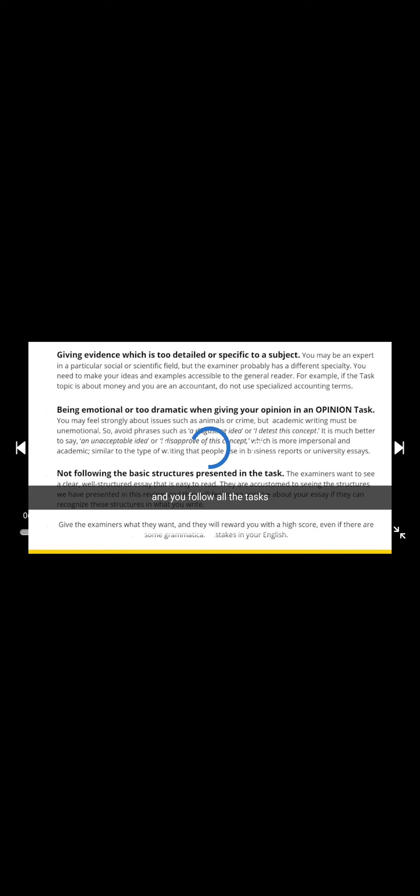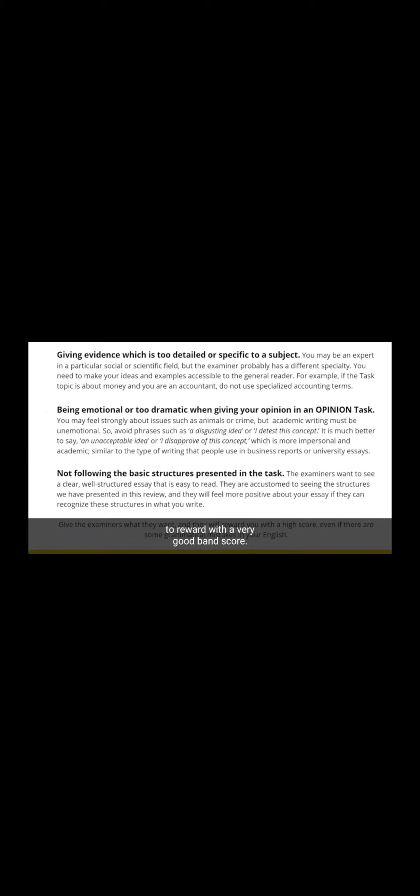If you do all these points and follow all the task requirements, I'm sure the examiner will be happy to reward you with a very good band score. Now we are going to discuss sentence types. You need to use four types of sentences to reach a higher score. The first kind is a simple sentence — a simple sentence has one subject and one verb. For example: 'Television offers a variety of programs.' Here we have one subject — television — and one verb — offers.